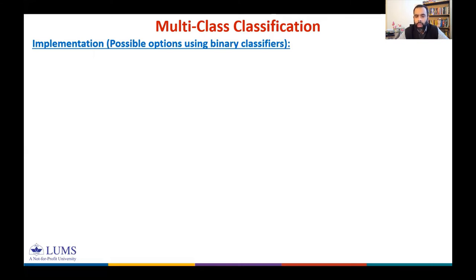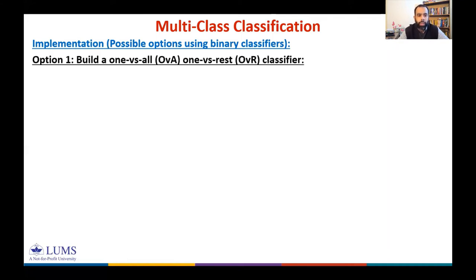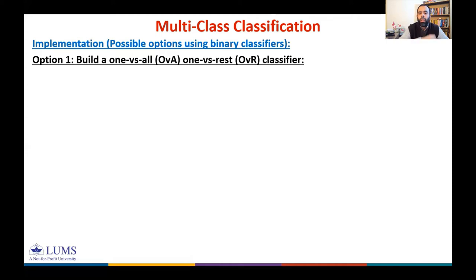There are different options proposed in the literature. I will talk about two options that are very commonly used and can be found in any machine learning textbook. Option one is to build a one-versus-all (OVA), also called one-versus-rest (OVR) classifier. This is how we can use a binary classifier to implement a multi-class classifier.